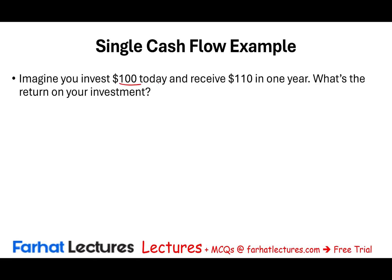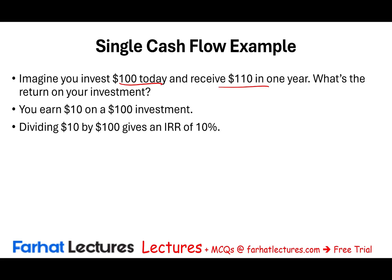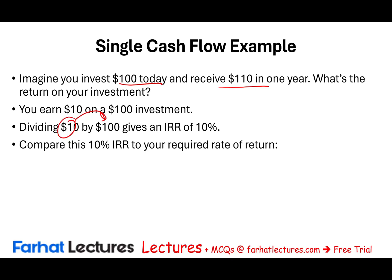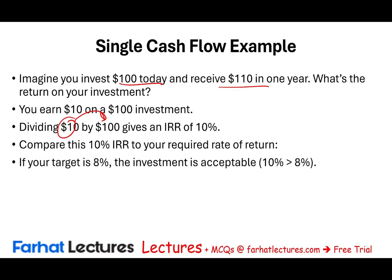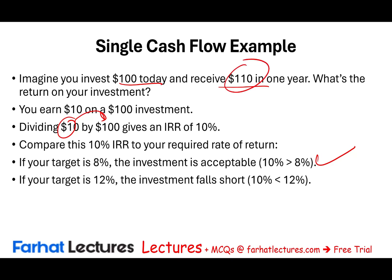Let's look at a simple illustration. You invest $100 today and receive $110 a year from now — you earned $10. Your rate of return is 10%: divide what you earned by 100, and that's your IRR. Then compare this IRR to the company's required rate of return. If the company wants to earn 8%, we accept. If the company wants to earn 12%, this is not an acceptable project.